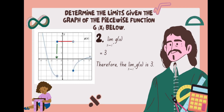Now we focus on Number 2: the limit of g of x as x approaches negative 1 from the right. It is almost the same as Number 1, except it refers to the right-hand limit. Looking at the graph, as x approaches negative 1 from the right, the value of y stops at positive 3. Therefore, the right-hand limit is positive 3. Since the left-hand limit is negative 3 and the right-hand limit is positive 3, the limit of g of x as x approaches negative 1 does not exist because the two limits are not equal.